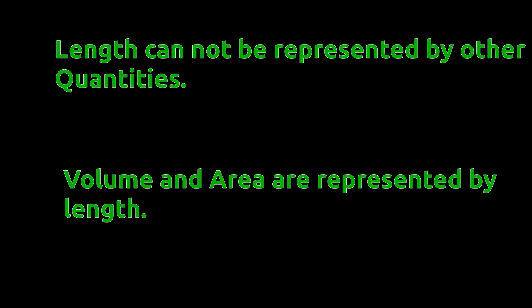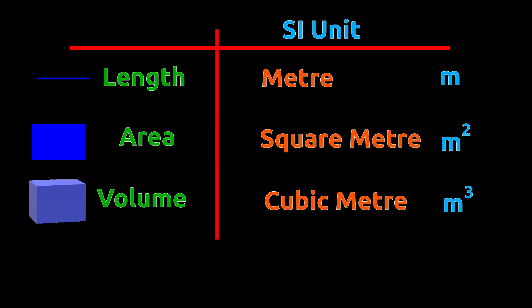On the other hand, area and volume are known as derived quantities because they are calculated by measuring different lengths. SI unit of length is meter, for area it is square meter, and for volume it is cubic meter.